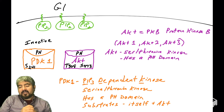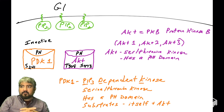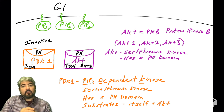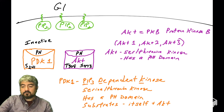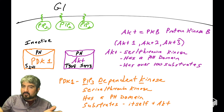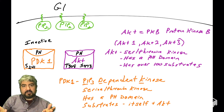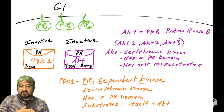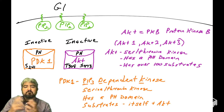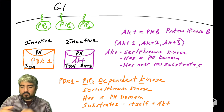AKT also has a PH domain and can bind PIP3. Two important phosphorylation sites on AKT are threonine at position 308 and serine at position 473 — these are key for regulating AKT activity. AKT has over 100 different substrates, phosphorylating and regulating many proteins with diverse roles. In G1, these residues are typically not phosphorylated and AKT kinase activity is not active.